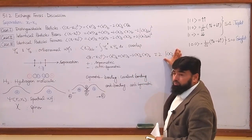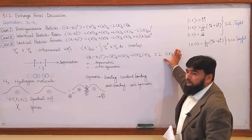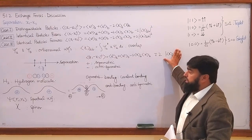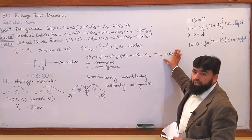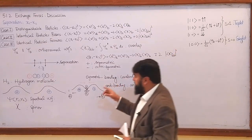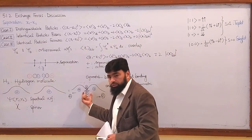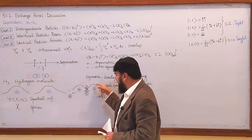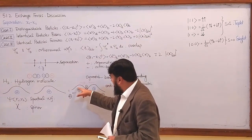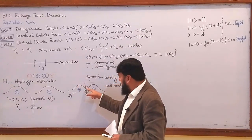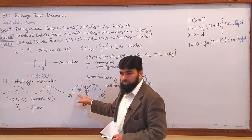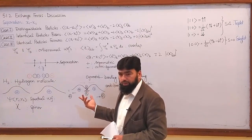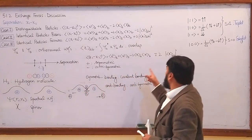This overlap term comes from the overlap of the wave functions because the particles are identical — we cannot recognize which particle is which. If the electron of one atom comes to this side and the electron of the other atom comes to that side, we cannot distinguish between them because the particles are identical. So this overlap is generating this exchange term.